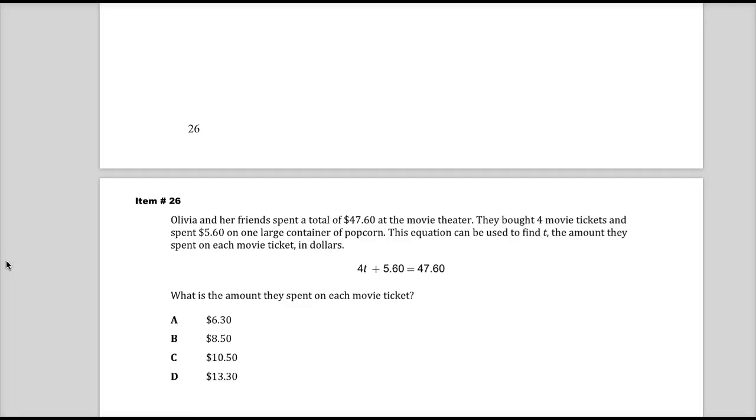Olivia and her friend spent a total of $47.60 at the movie theater. They bought four movie tickets and spent $5.60 on one large container of popcorn. Now, at one point in time, people were like, they spent $47 at a movie theater for four people? That's ridiculous. Now people would be like, that's not bad. You'd think that was a decent deal. But a few years ago that would have seemed, it might as well be a million dollars.